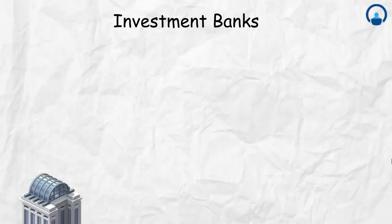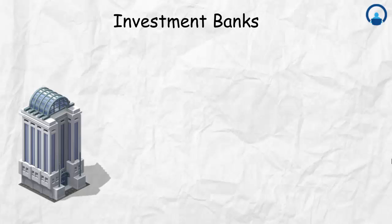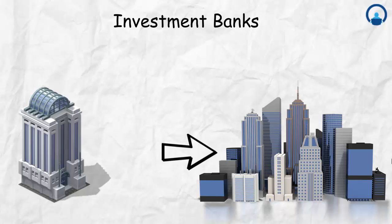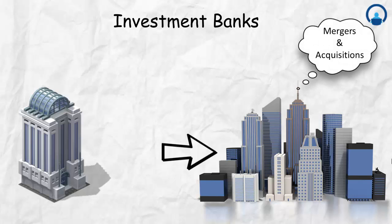Next we have investment banks. Investment banks advise different companies on mergers and acquisitions, underwriting IPOs, underwriting debt offerings, and raising capital. They also have a sales and trading side where they make money by taking trades from clients and charging a commission. We won't go into full detail on investment banks since we are concentrating on commercial banks, but that covers their main functions.